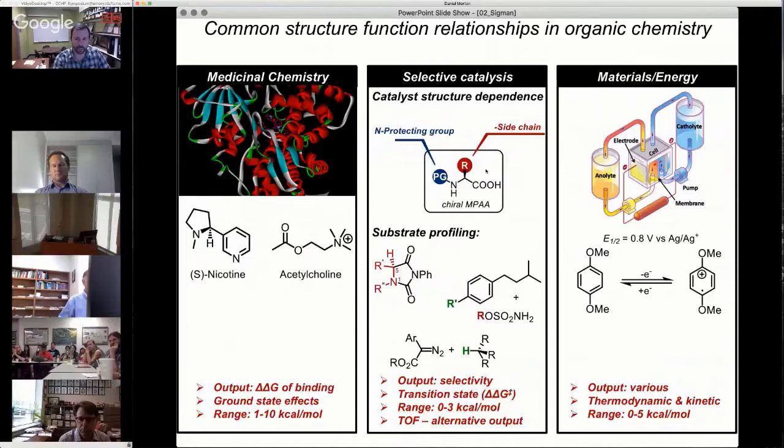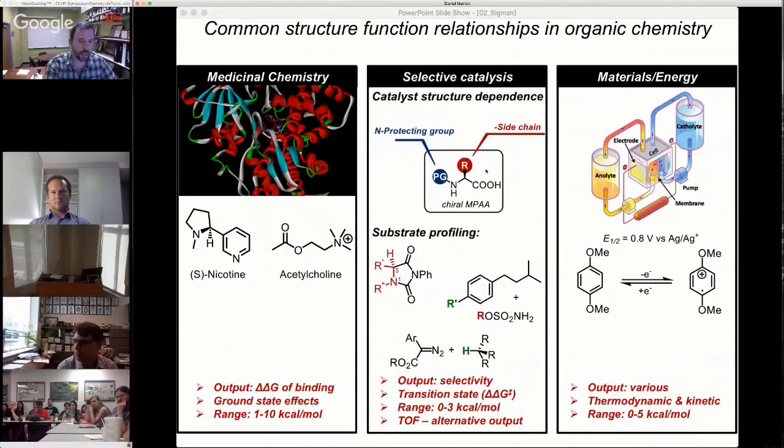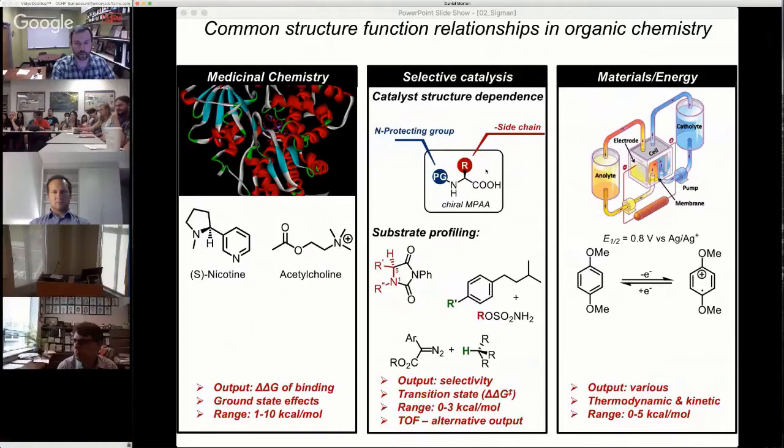In catalysis, I think all of us would agree this is a much harder problem because we're often looking at selectivity outputs. This could be site selectivity, how do you predict where a CH bond is going to cleave, or enantioselectivity. These ranges are much lower, we're talking about transition states, and we're talking about multiple transition states where we don't even know who the players are because many additives are added to these reactions.